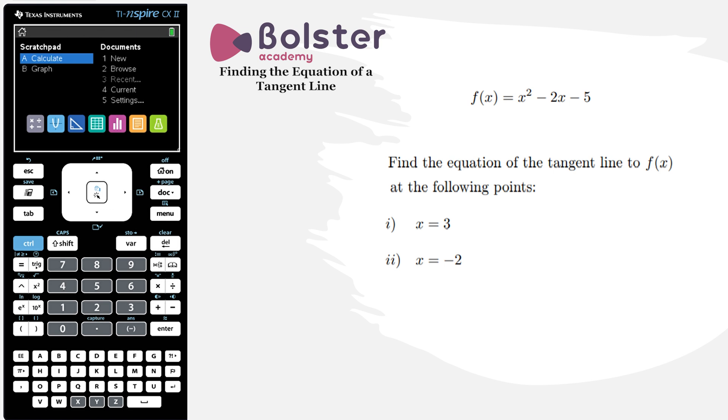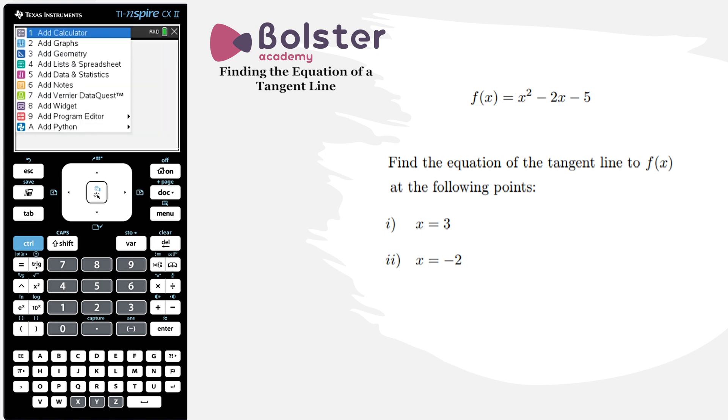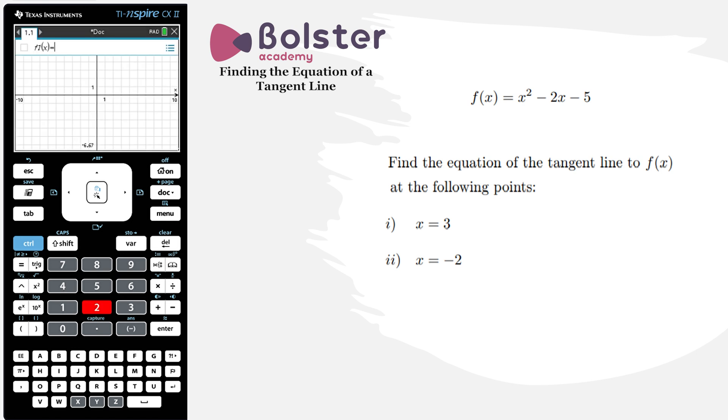Up to this point we've been using scratchpad for everything, but now we're going to use documents because there's one key functionality missing in scratchpad that we need for this analysis. So instead of hitting scratchpad this time we hit option number one new document and we add graphs option number two. This display is very similar to the graphical display in scratchpad. It's almost identical except we have some more functionality with it.